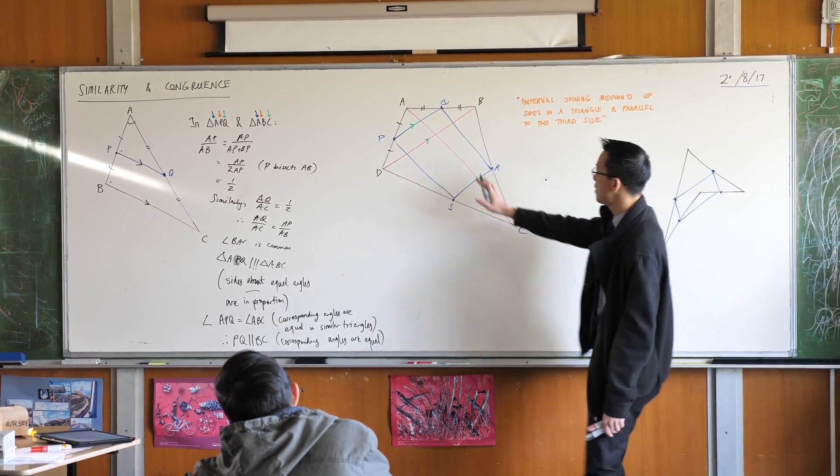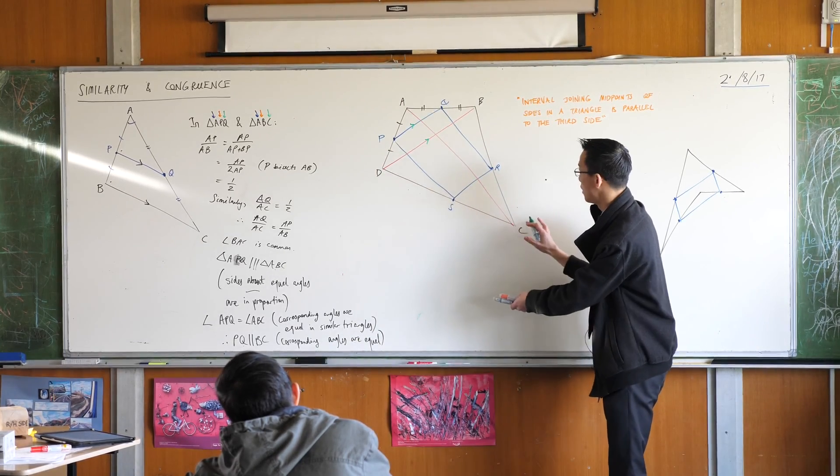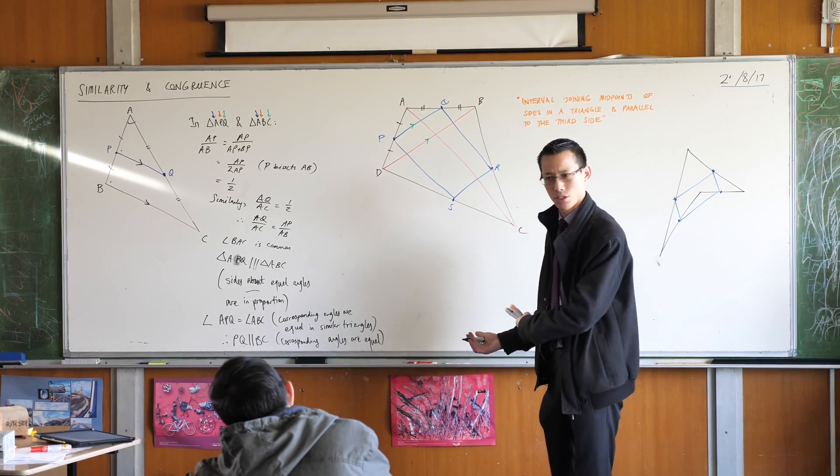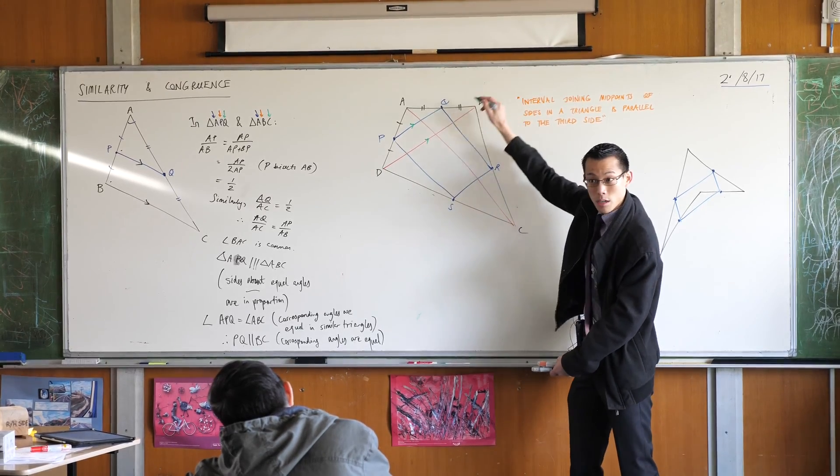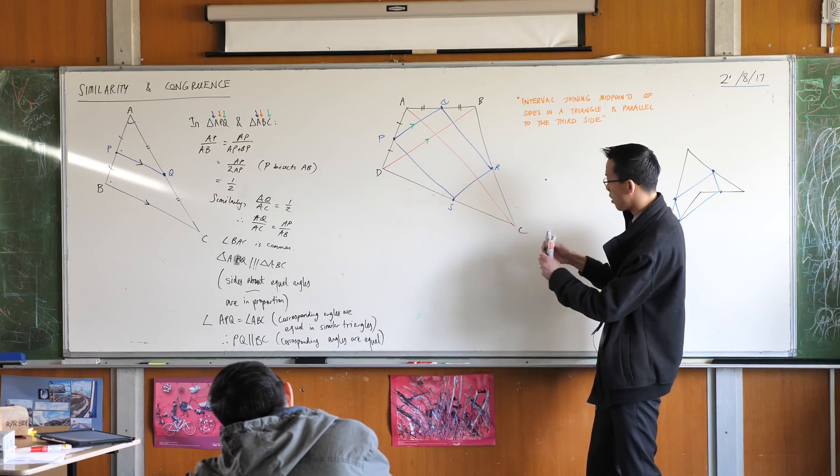But now, just pretend that this part of the diagram doesn't exist. Look at this bottom part over here. Do you notice it's exactly the same setup but upside down? Do you see it? Triangle BCD, this big one, is the same - oh look, my triangle's been cut into two. By the way, this is going to be useful for you particularly in the last thing I'm going to show you today.